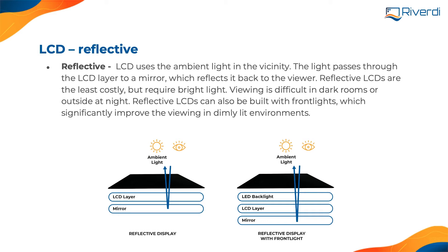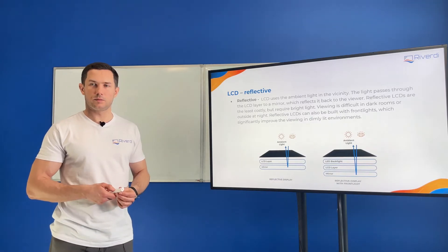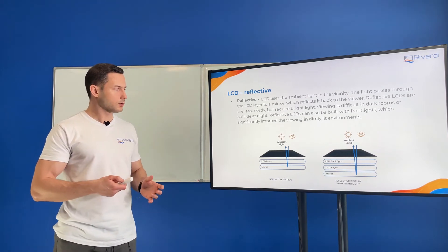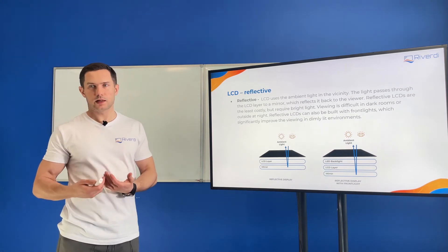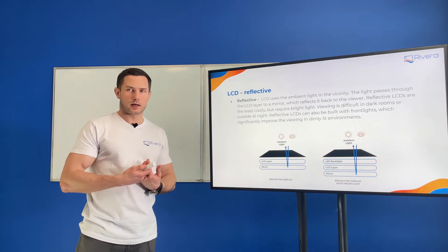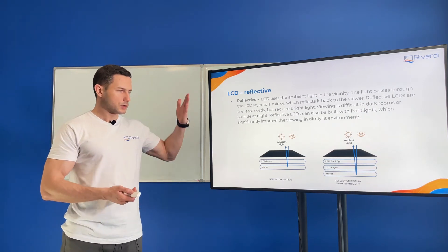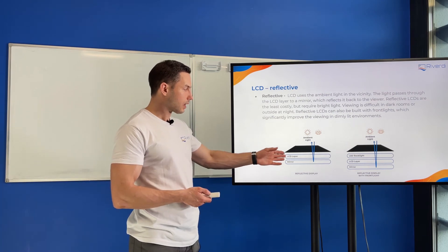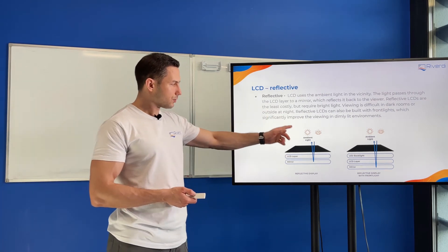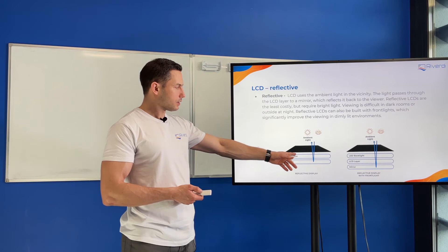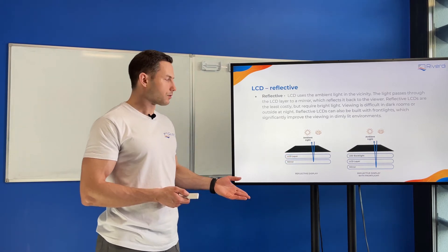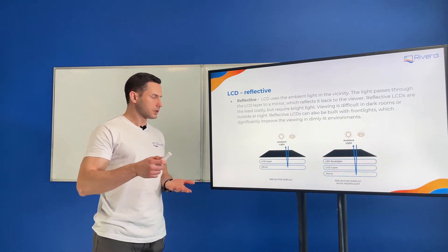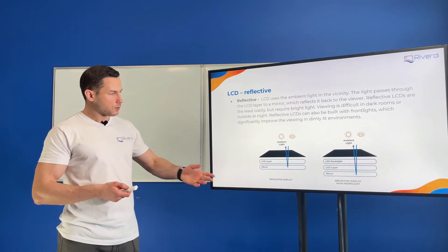The next display, which is also fairly simple, is the reflective display. In the most basic example, it has no backlight at all — a calculator is a good example. We just use the environmental light, which is being reflected. It goes through the LCD and then is reflected on the mirror that is on the back of the screen.